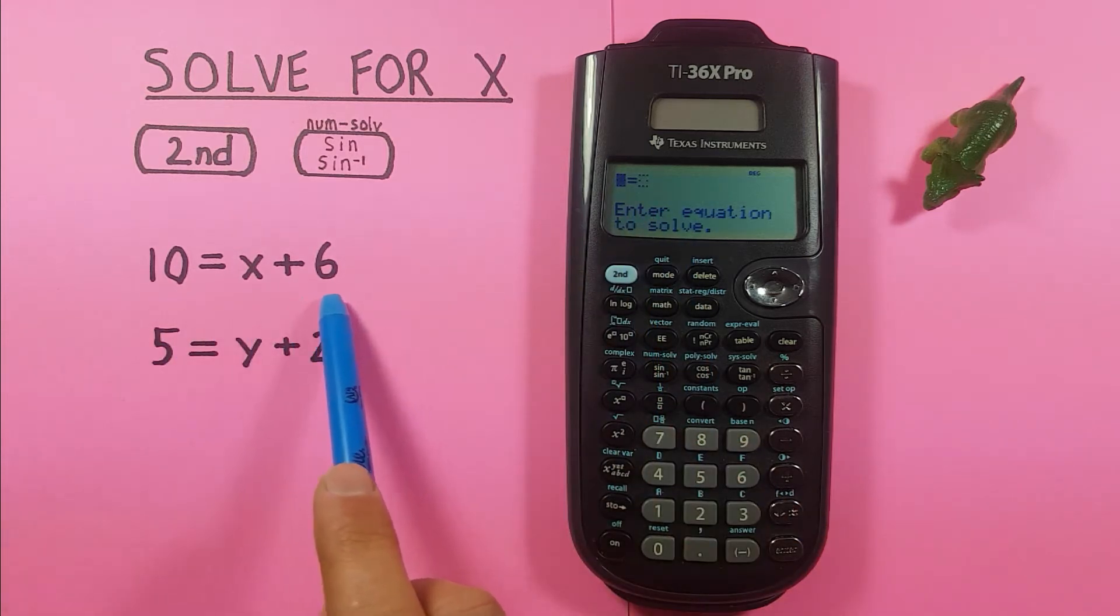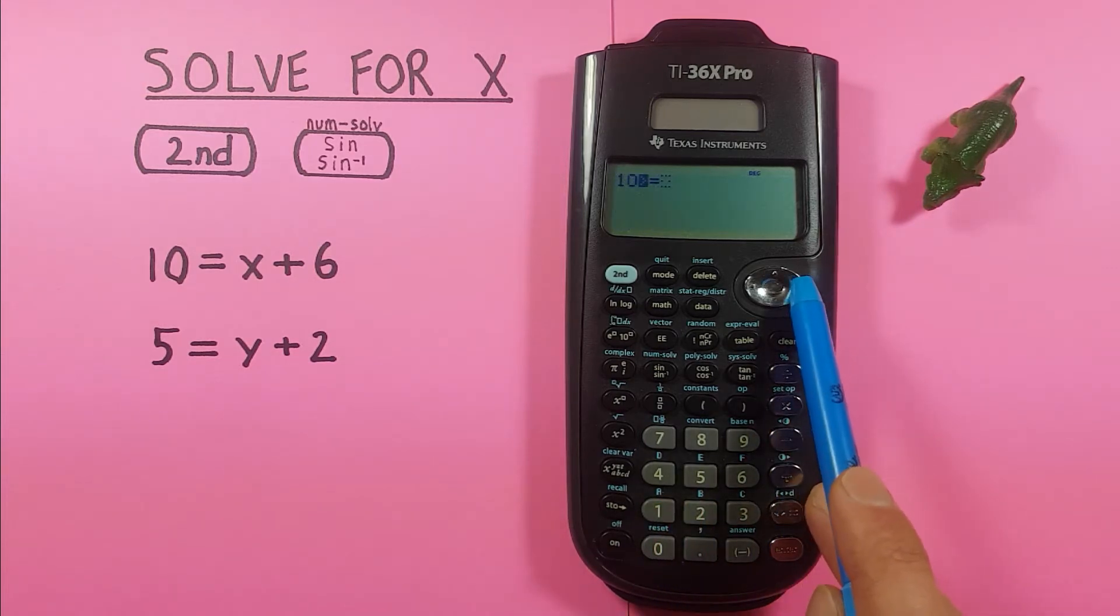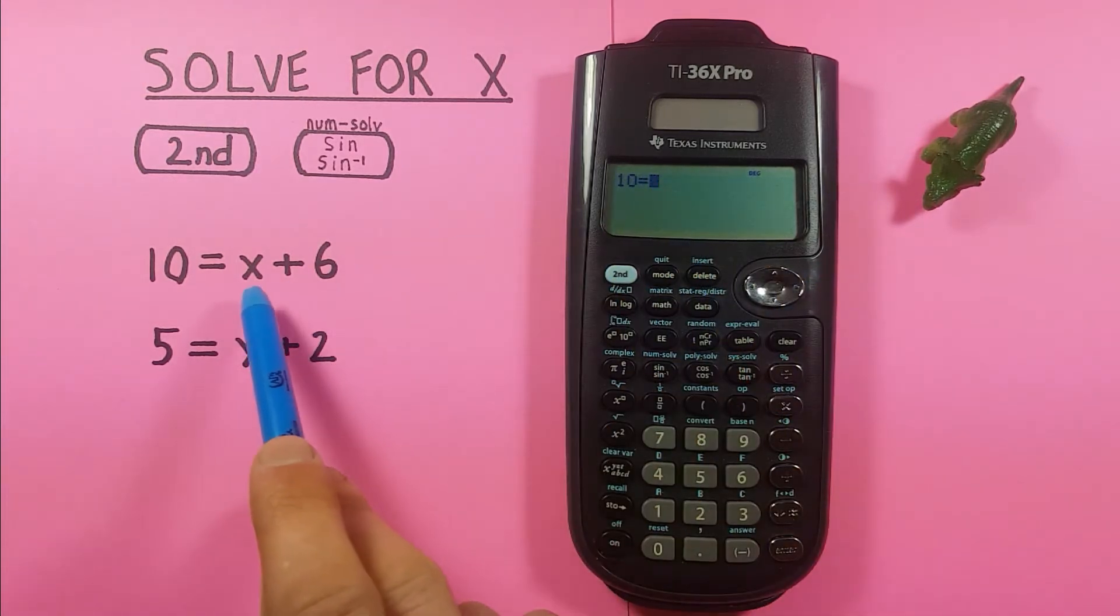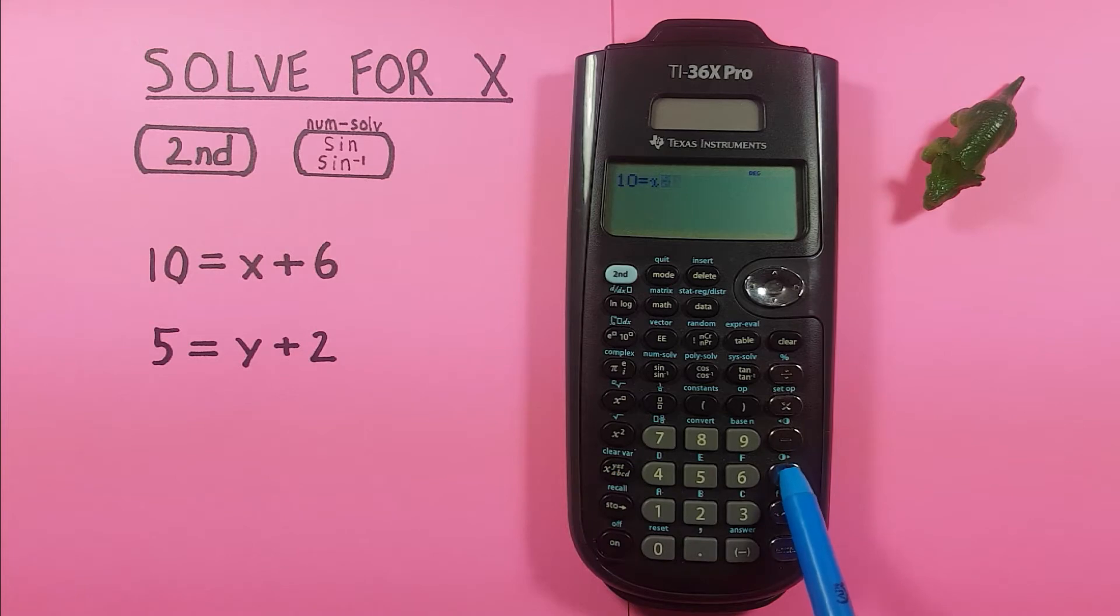So our example equation is 10 equals x plus 6. So we enter the 10 in on the left side and then scroll to the right one and then x plus 6. So we press the x key. That's located here and then plus 6. We can then press enter.